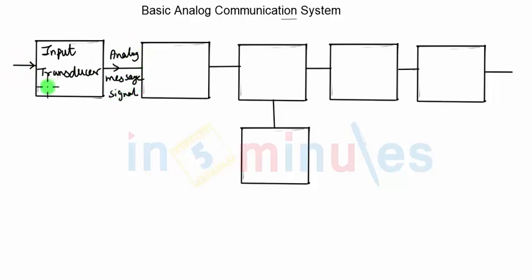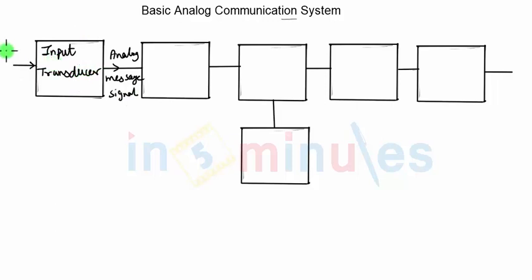In many cases we may not have a transducer — we may already have a stored message or data which needs to be transmitted. In that case we directly start from the analog message signal. If we do introduce the transducer, the input can be any physical quantity being measured, and the resulting analog message signal is then given to the transmitter.